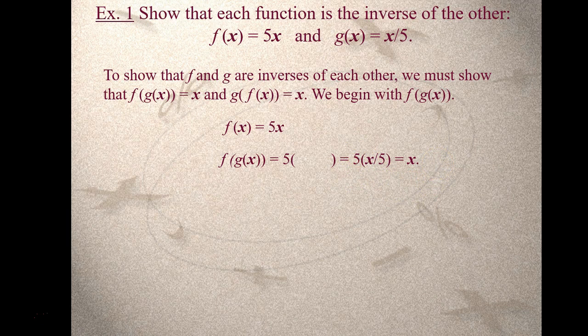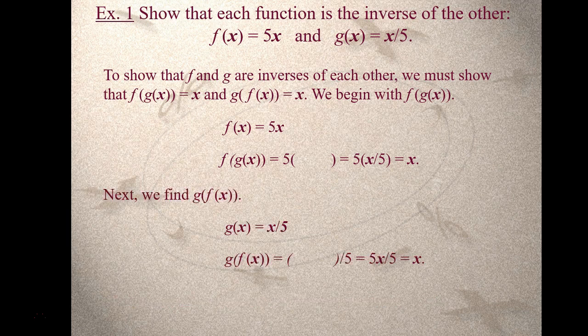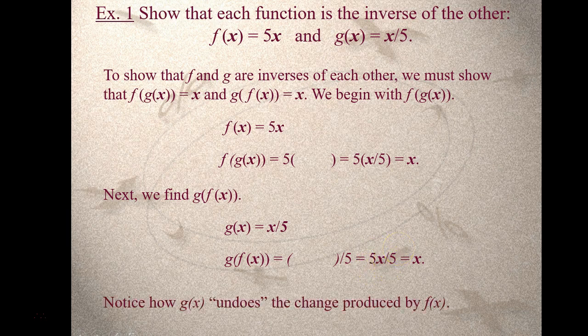Those fives would cancel out and just leave me with x. Now try doing g of f of x, where g is the outer function. So g is x divided by 5, I replace that x with parentheses, giving me parentheses over 5. Inside the parentheses is f of x, which was 5x. Those fives would cancel out and just leave you with x. So we did f composition g and g composition f, and they both left us with x, which shows that they're inverses of each other.